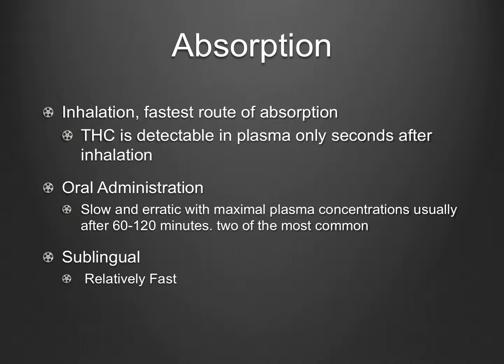Absorption is the first part of pharmacokinetics and it describes how our body absorbs a certain compound. Inhalation is the fastest route of absorption for THC or most cannabinoids, as THC is detectable in plasma only seconds after inhalation. Oral administration shows slow and erratic absorption with maximal plasma concentrations usually after 60 to 120 minutes. Sublingual administration is also relatively fast compared to oral administration.